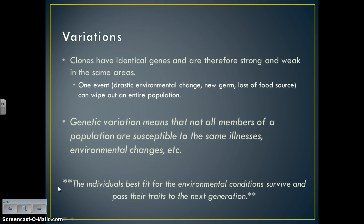Clones, which have identical genes, are strong and weak in the same areas, so one event can wipe out the entire population. Genetic variation means not all members of a population are susceptible to the same illnesses or environmental changes. The individuals best fit for the environmental conditions survive and pass their traits to the next generation.